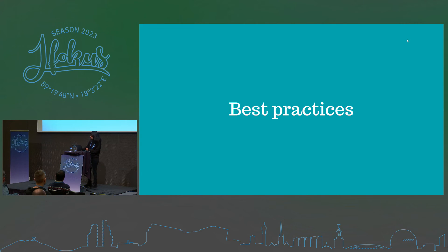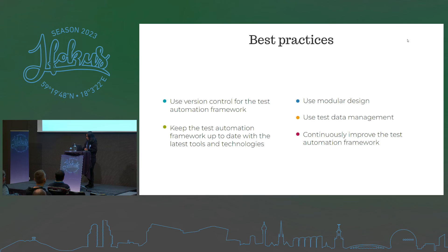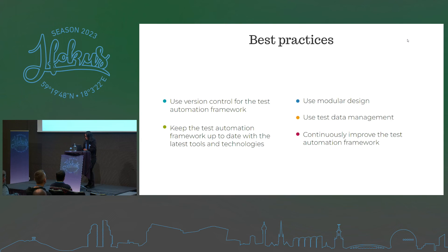Next up is best practices. The best practices include: using version control for the test automation framework — it's mandatory — keeping the framework up to date with the latest tools and technologies, modular design, test data management, and continuously improving automation testing. Using version control is mandatory: it allows you to track changes made to the test automation framework over time and makes it easy to revert to a previous version if necessary.